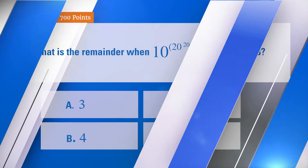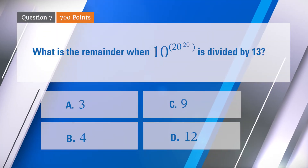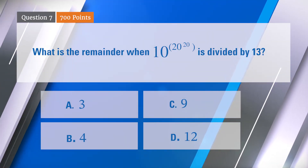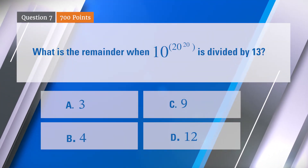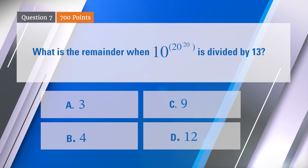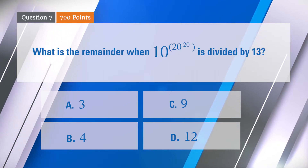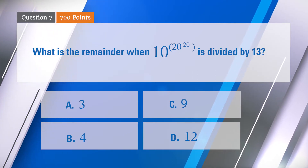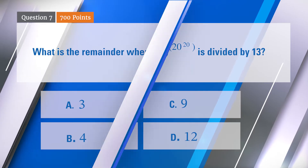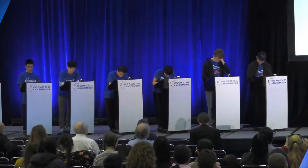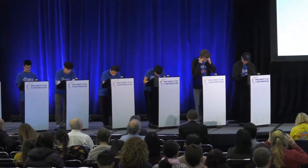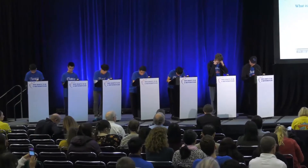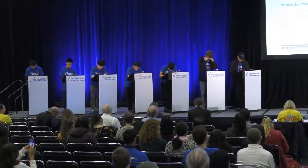What is the remainder when 10 to the 20 to the 20th power is divided by 13? Is it 3, 4, 9, or 12? This one's pretty straightforward. Feel free to ask a question if you have one — you have 75 seconds for this one.